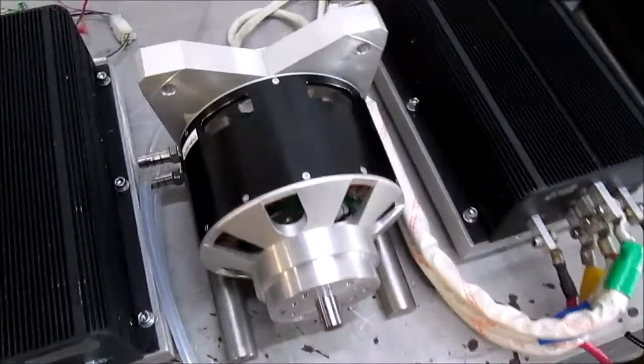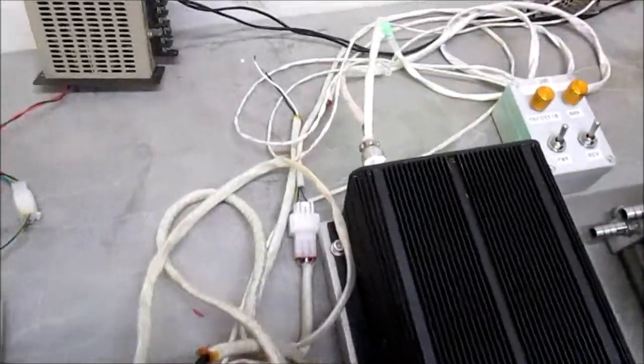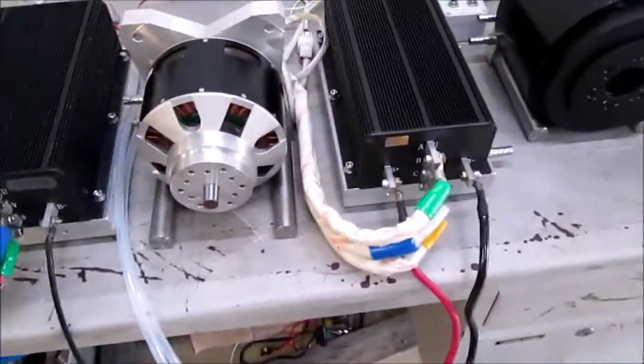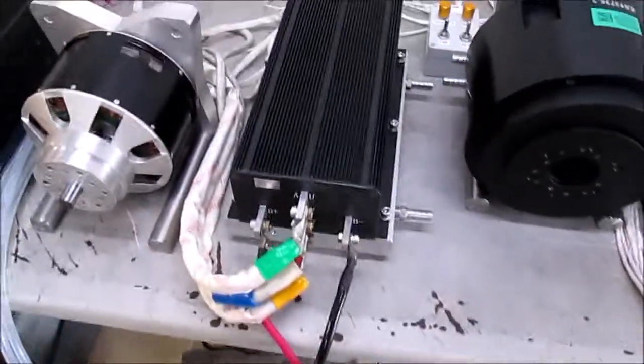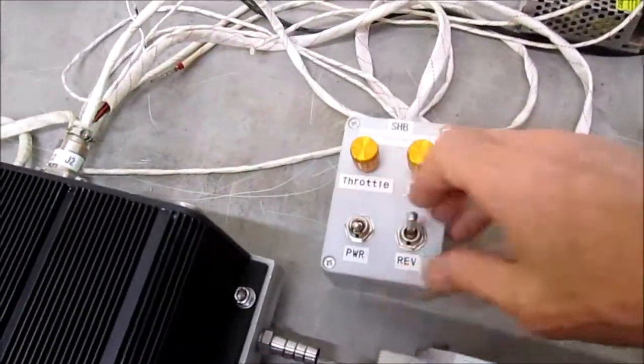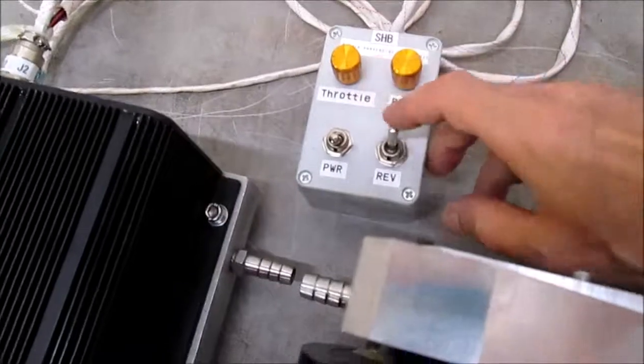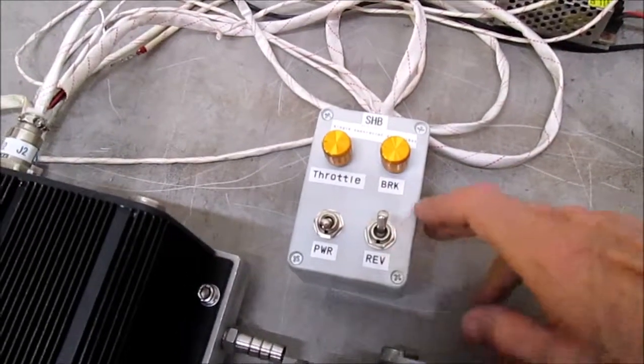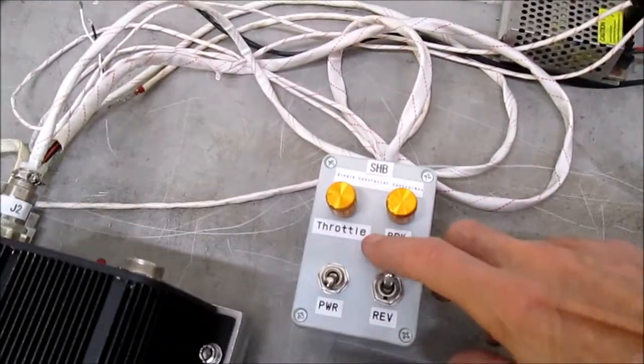So this is a complete assembly. Fired up the controller. Motor. Now we have the controls here. This is power on and off. Forward, reverse, brake and throttle.